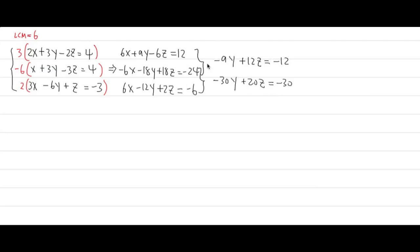Now we have a 2x2 system of equations. Looking at the coefficients of z — 12 and 20 — the LCM of 12 and 20 is 60. Since 12 goes into 60 five times, multiply the first equation by 5. Since 20 goes into 60 three times, but 5 times positive 12 gives positive 60, I'll multiply the second equation by negative 3 instead.